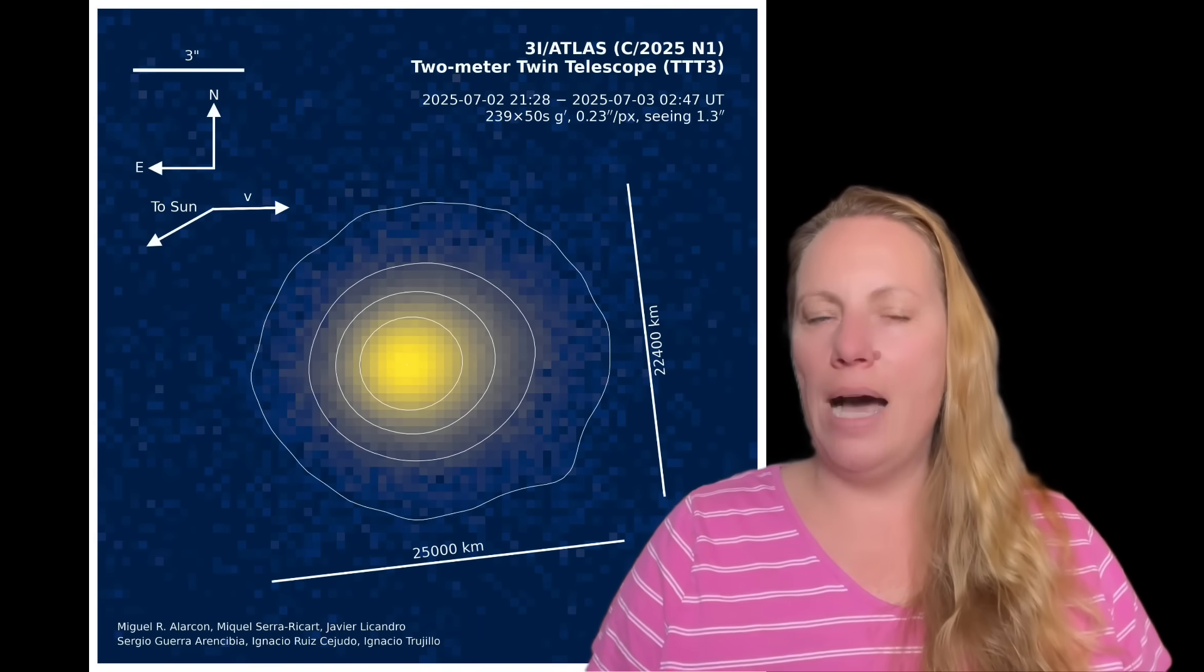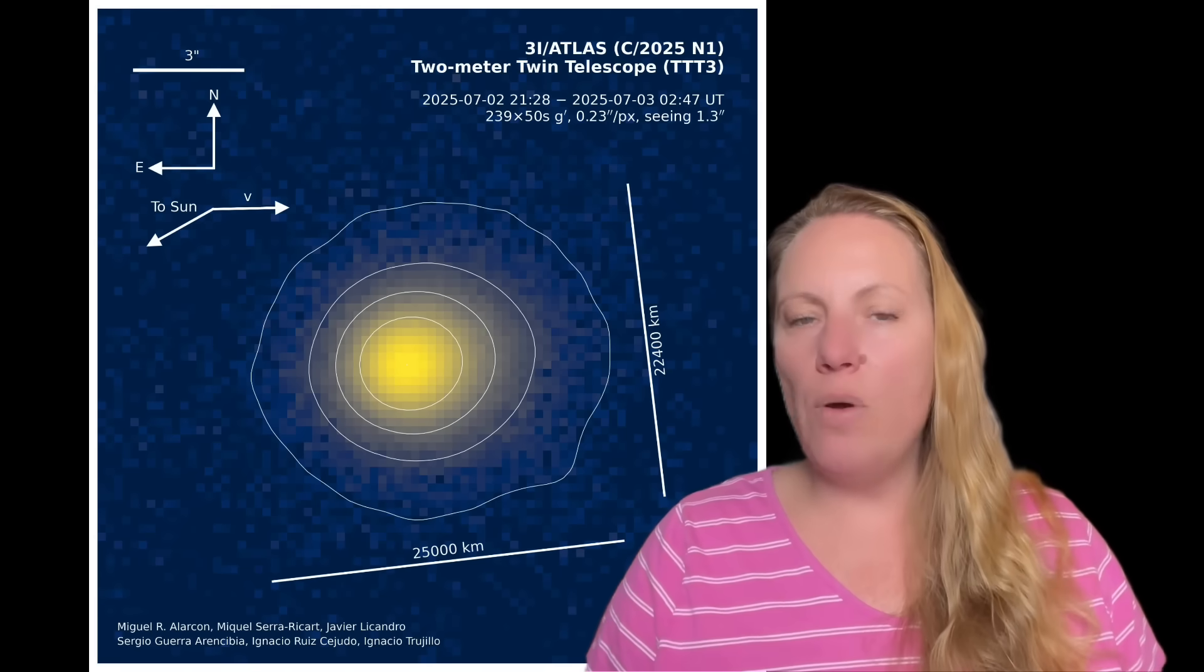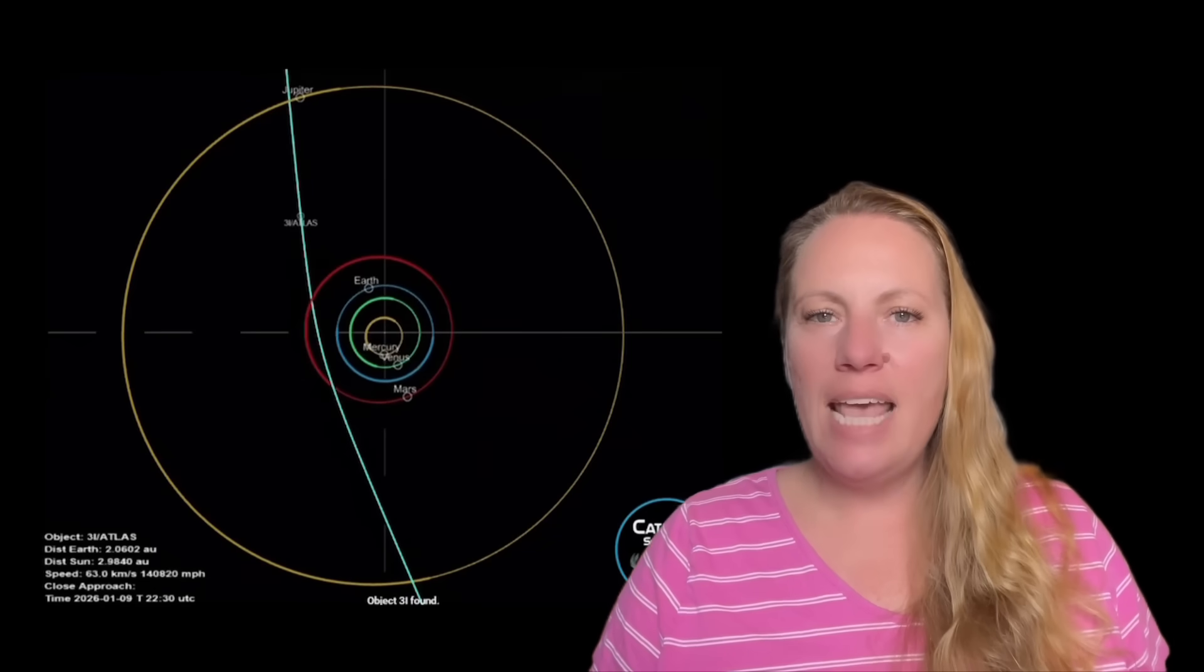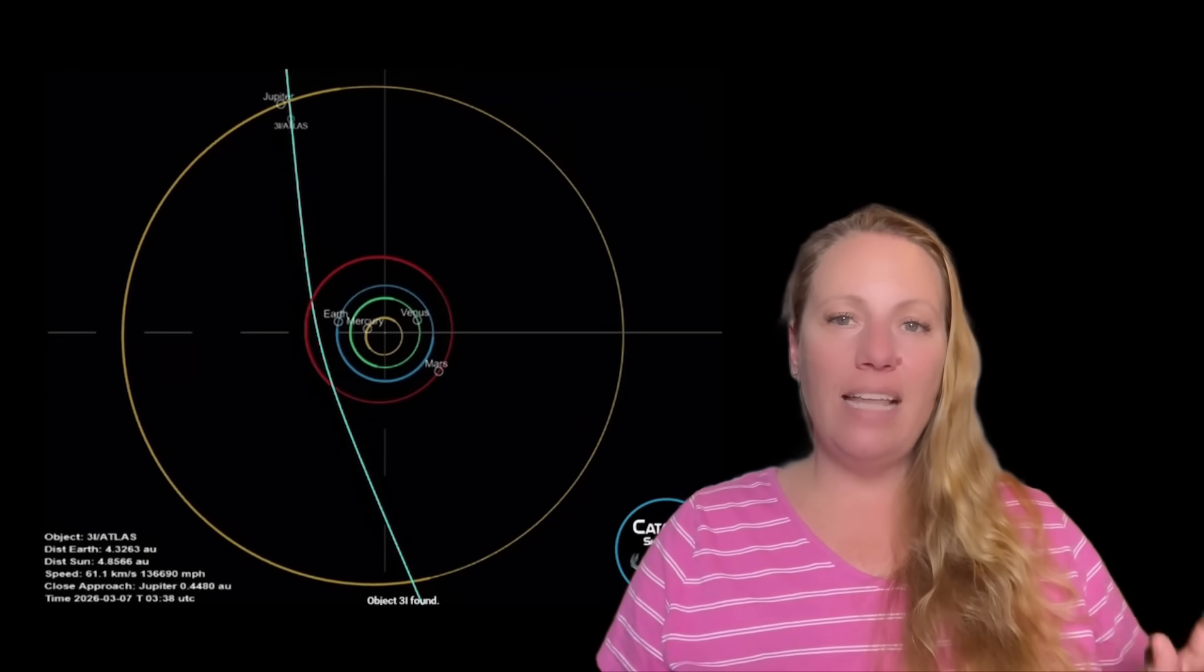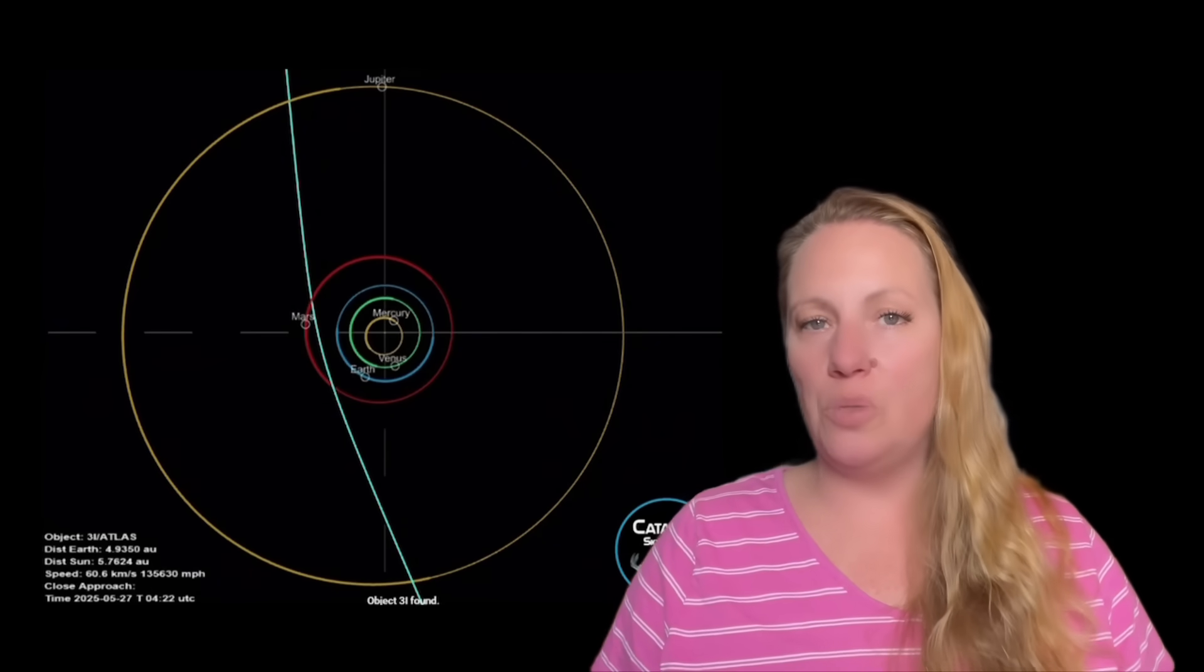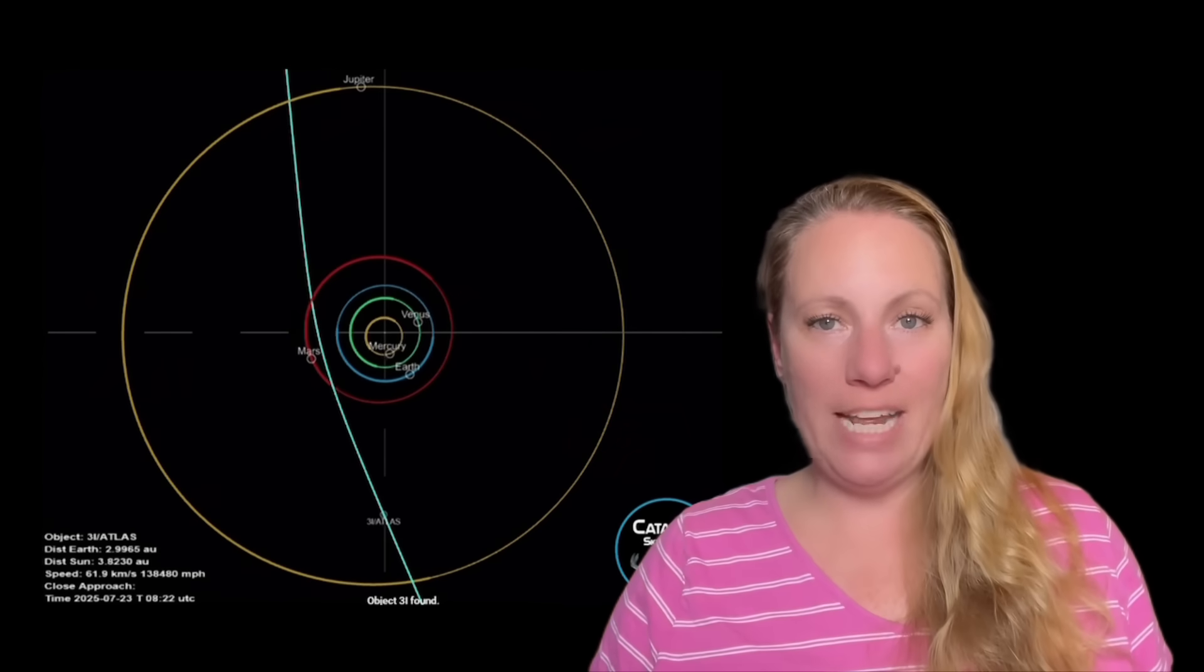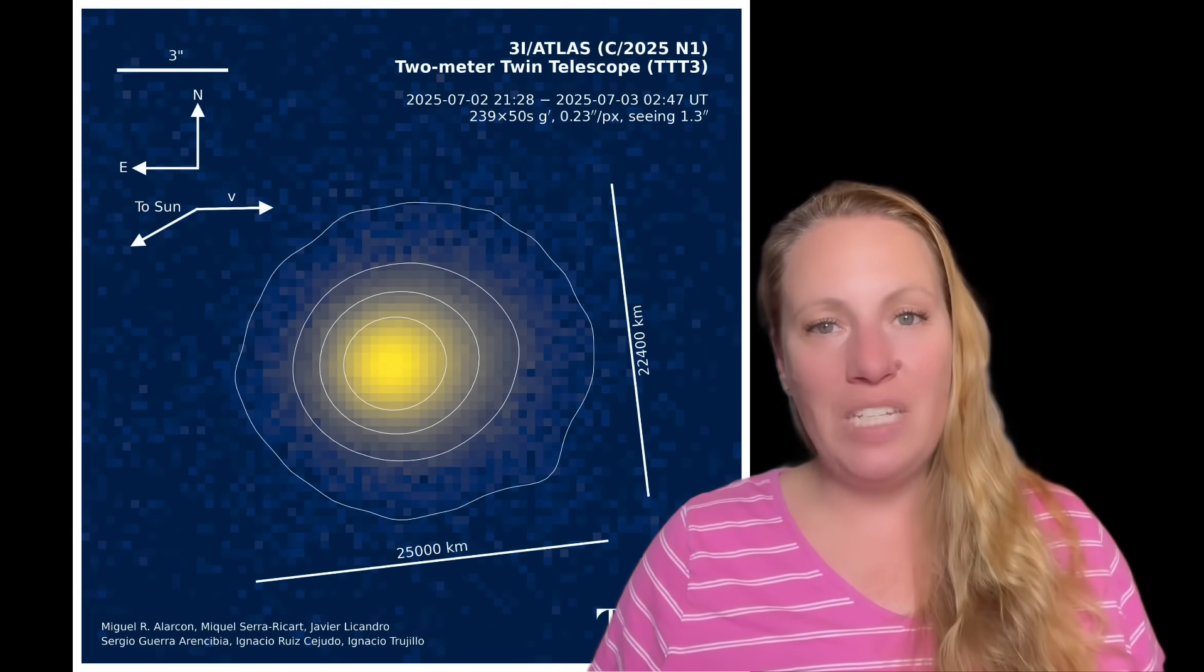So the coma of interstellar object 3i atlas, the coma is the glowing cloud around the comet. It has spiral patterns, and these jets that look exactly like the plumes that we see on icy moons. So could that be a natural explanation for these jets? Wouldn't we be disappointed that it's not the aliens coming?